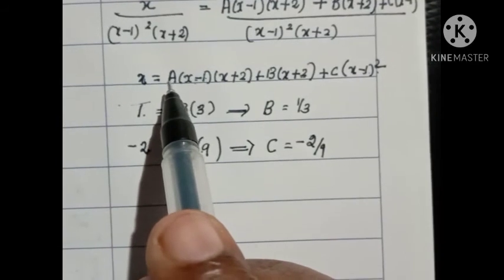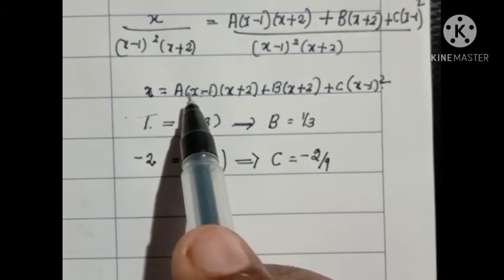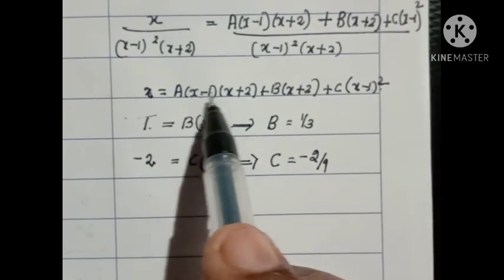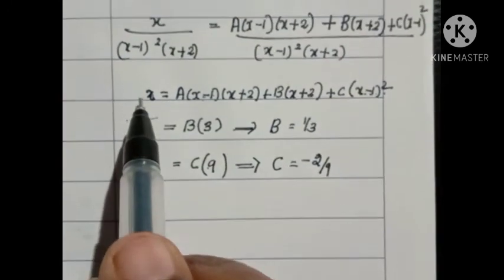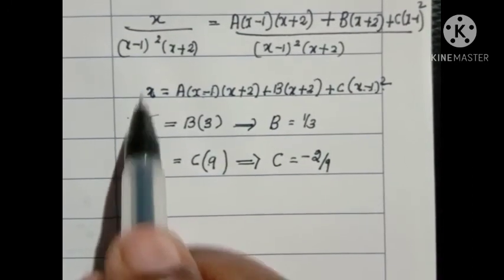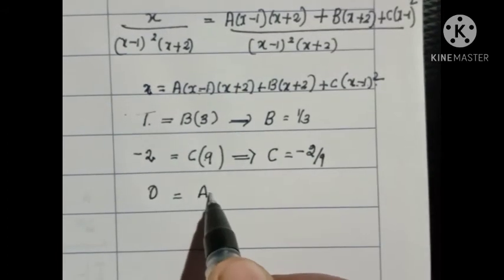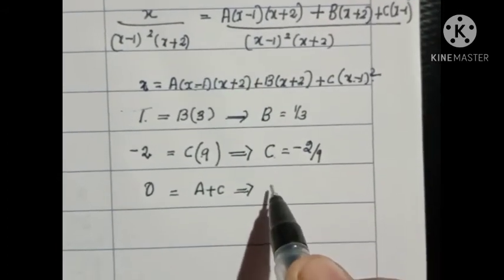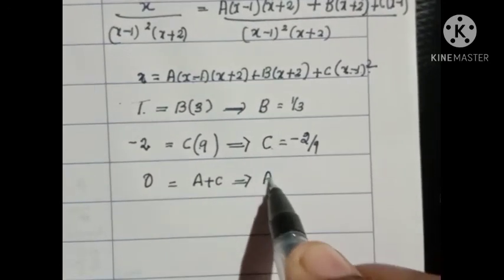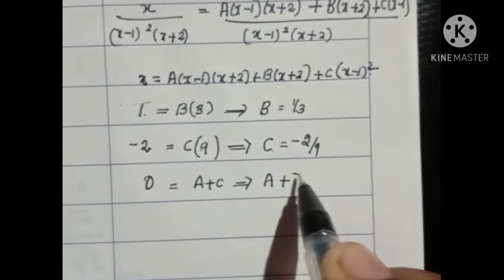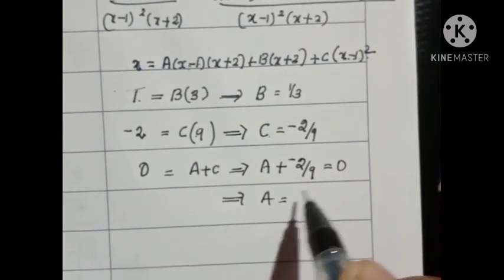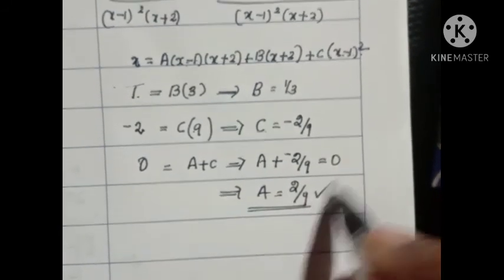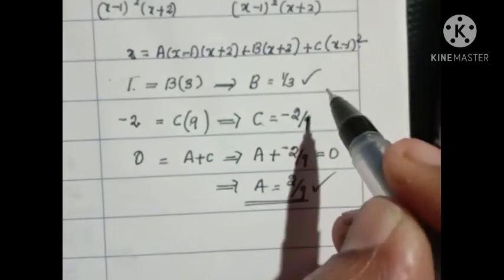To obtain A, equate the coefficient of x². On the left side the coefficient is 0. On the right side, coefficients of x² come from A and C. So A + C = 0. Since C = −2/9, we get A = 2/9. Thus A = 2/9, B = 1/3, C = −2/9.